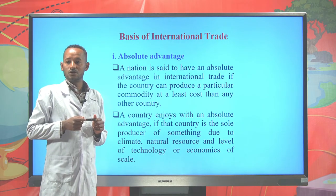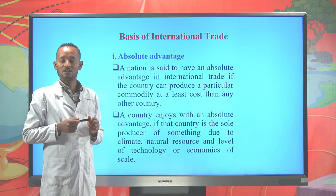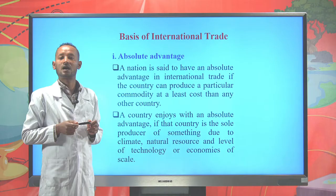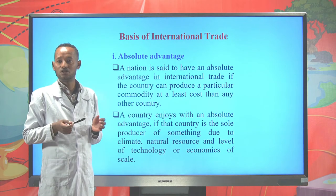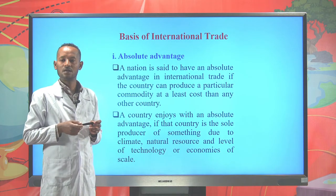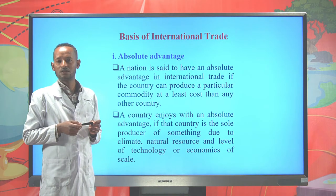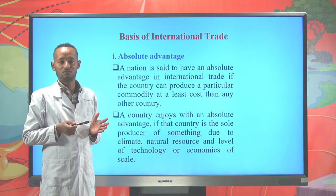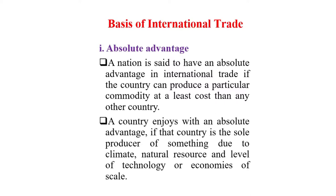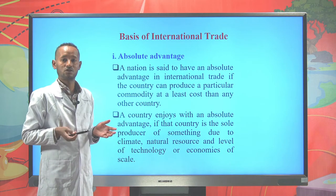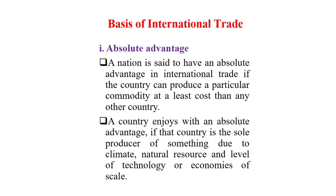A country enjoys absolute advantage if it is the sole producer of something, or if it can produce a product due to climate, natural resources, level of technology, or economies of scale. For example, due to natural resources, South Africa has an absolute advantage in the production of diamond. Some countries also have climates that enable them to produce more agricultural commodities at the least cost, giving them an absolute advantage.